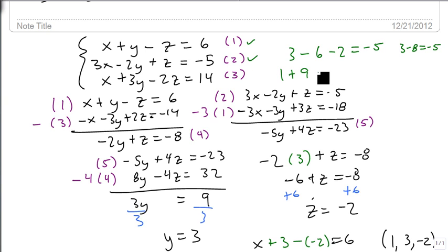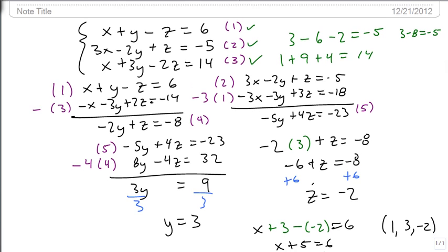So it works for the first one and the second one. 1 plus 9 plus 4 is 14. 1 plus 9 is 10. 10 plus 4 is 14. So it also works for our third one. And we've checked all three of our answers, our points, and so we know that this is, in fact, the solution to our system.